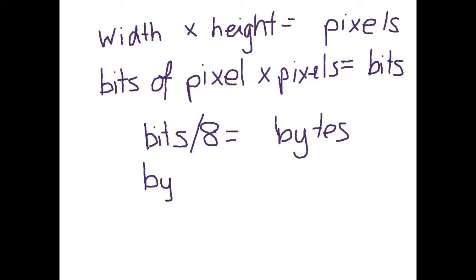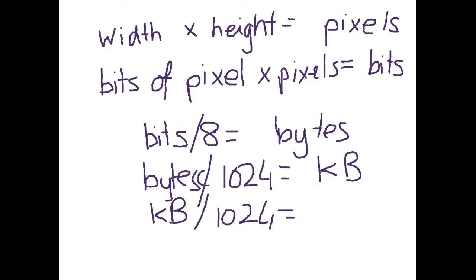Then we divide the number of bytes by 1024 to figure out how many kilobytes. Now if we wanted to keep going further, if that was a really large number, then we might divide by 1024 again to figure out how many megabytes and divide by another 1024 to get gigabytes. So it depends on how many bits you start with as to how many levels of division you would go.